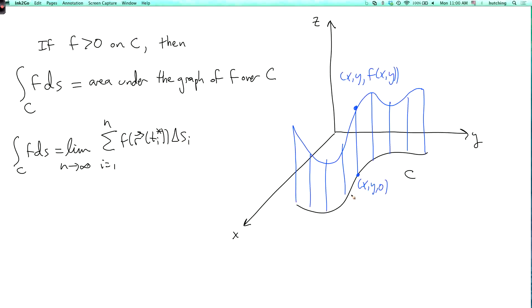So what does that mean in terms of this picture? Well, let's say this point is r of ti, and this point is r of ti minus 1. Then the length of this little segment here is delta si. And then we're going up to a height. So then we pick some sample point in here.